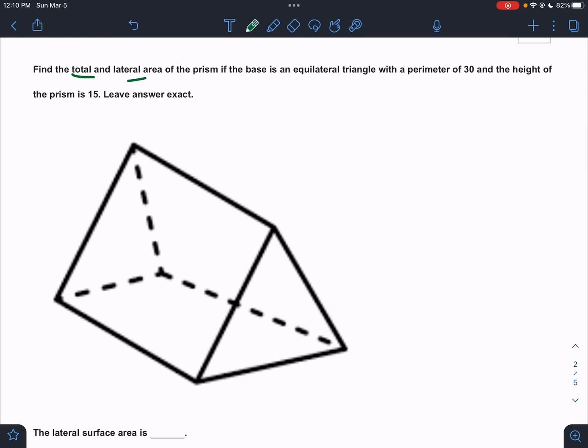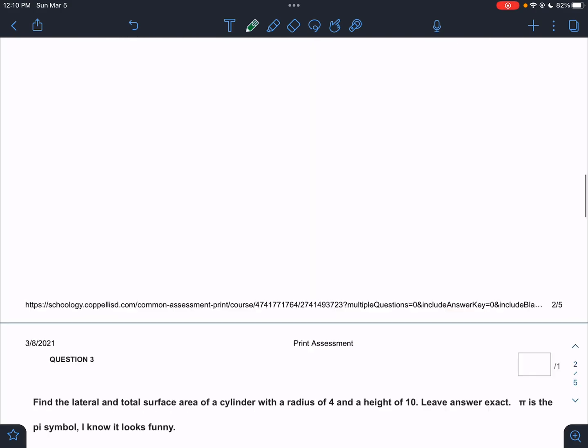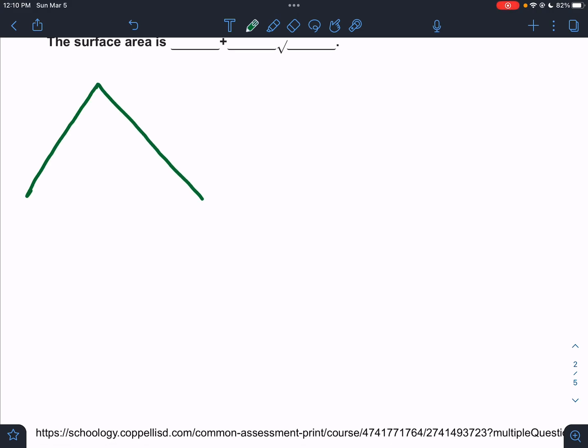The total and lateral for the prism. Now, this way we don't have a choice. The bases must be the triangles. And it's an equilateral triangle with a perimeter of 30. So the first thing I'm going to do is I'm going to work on the equilateral triangle. If the perimeter is 30, each side is 10.